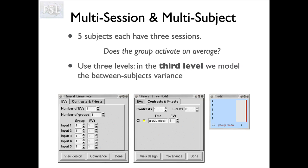When we get to the third level, it's quite simple. We have five subjects in one group, so we do exactly what we saw a few slides earlier — a single group average. This level is no different from what we would have done if we'd had only one session per subject, because it's fed by the values from the level below. We have one value per subject now because we've averaged the sessions, so this level just sees data as if there was one value per subject. If there were multiple groups, you would just use whatever was appropriate at this level.